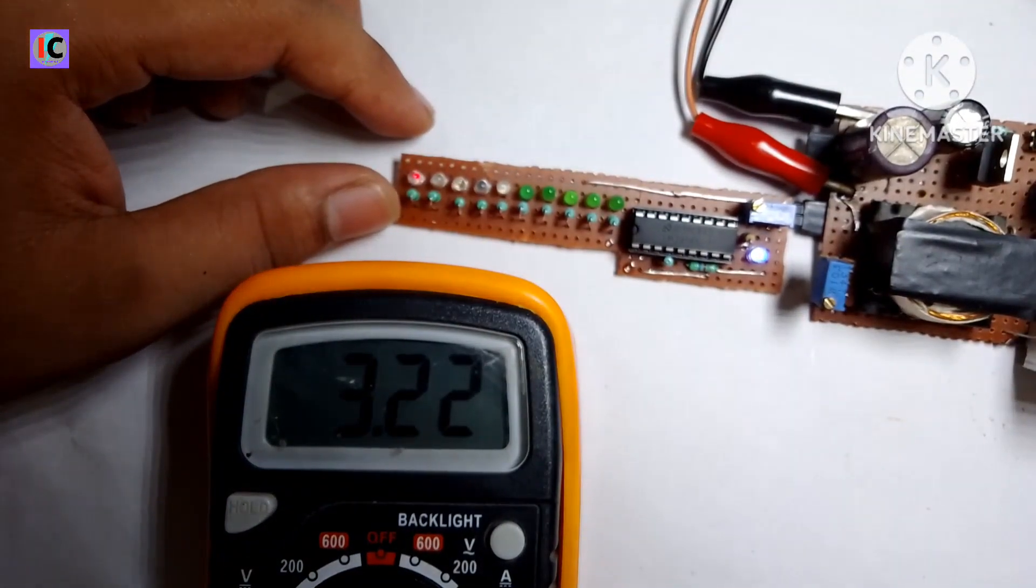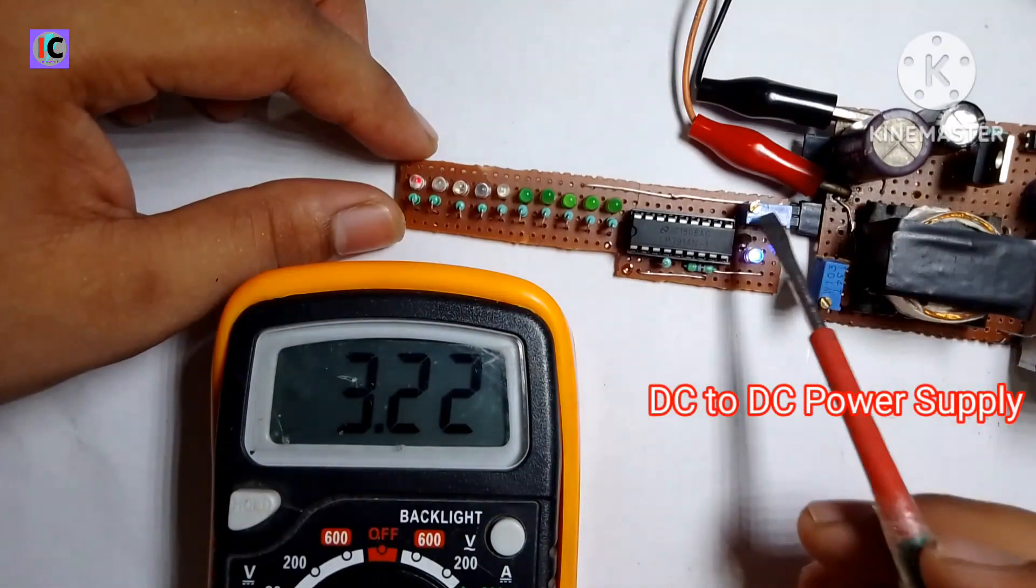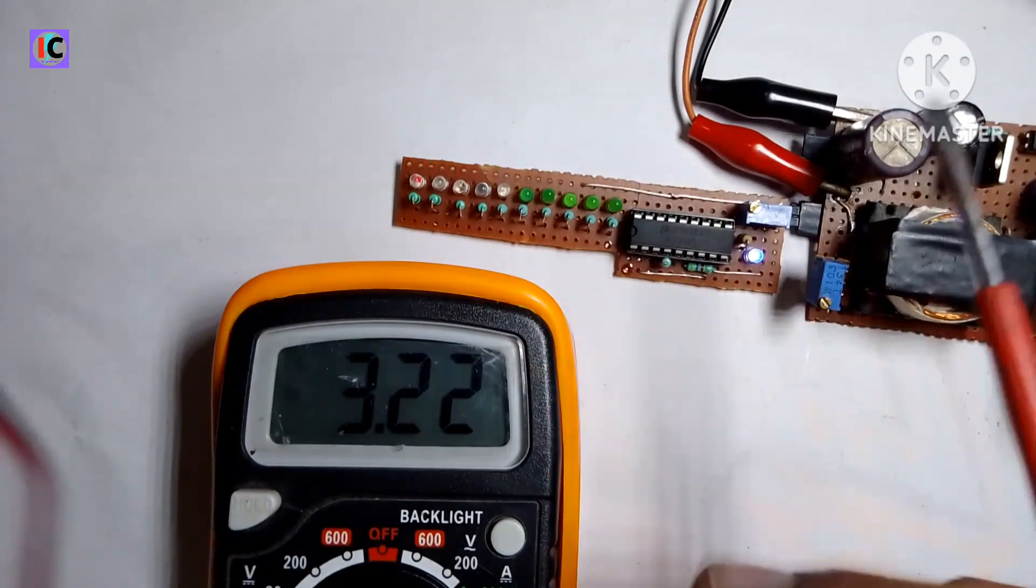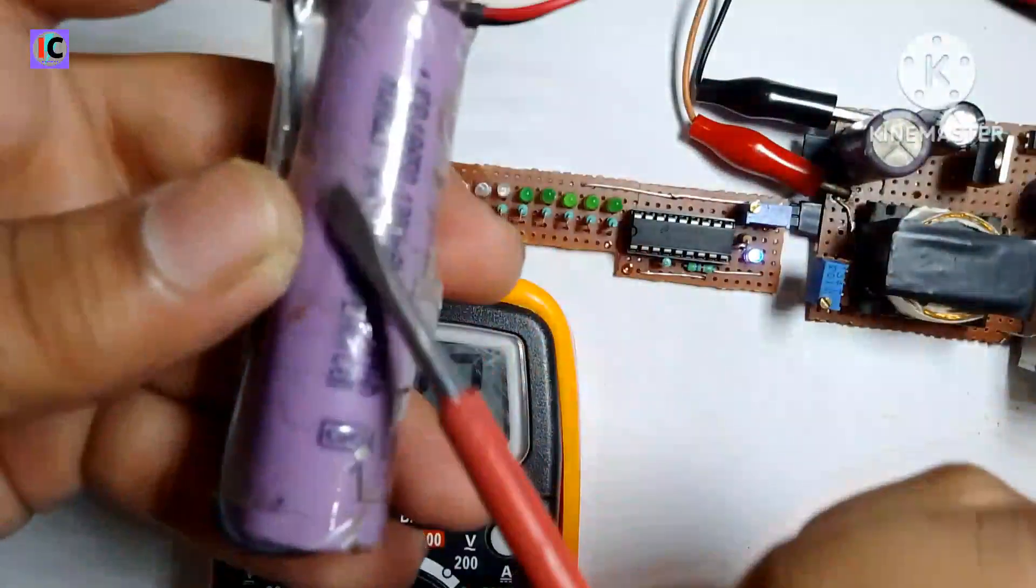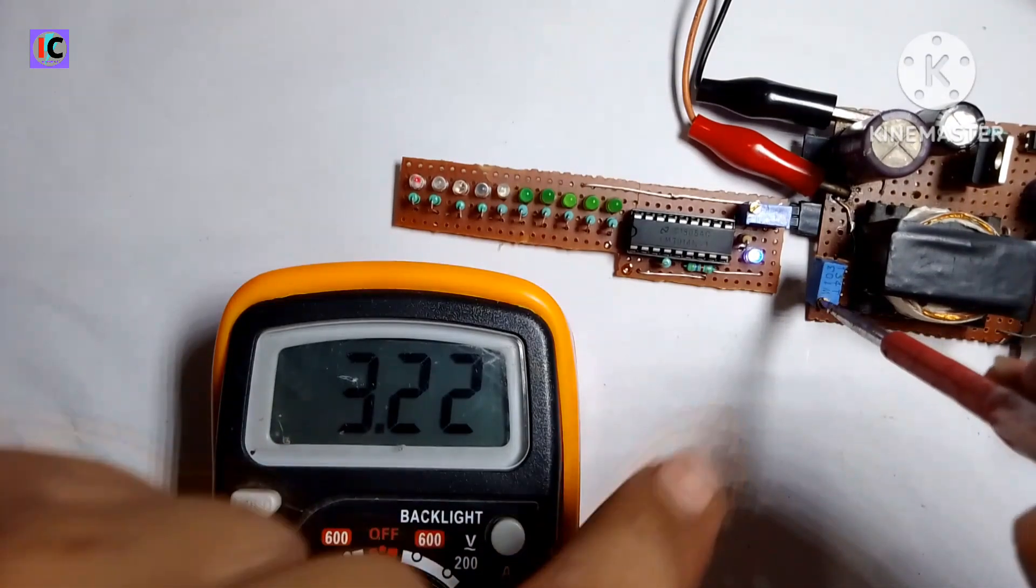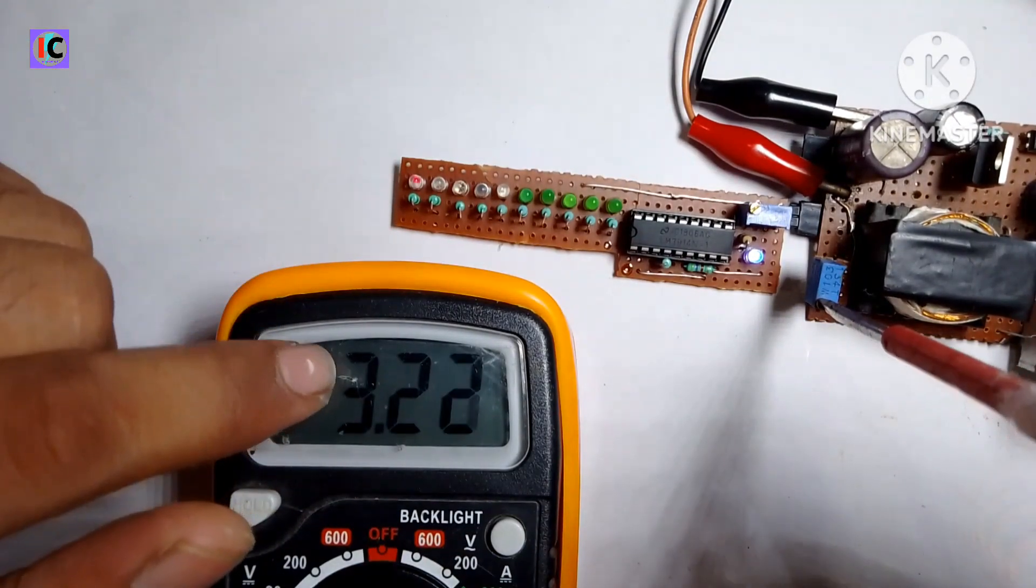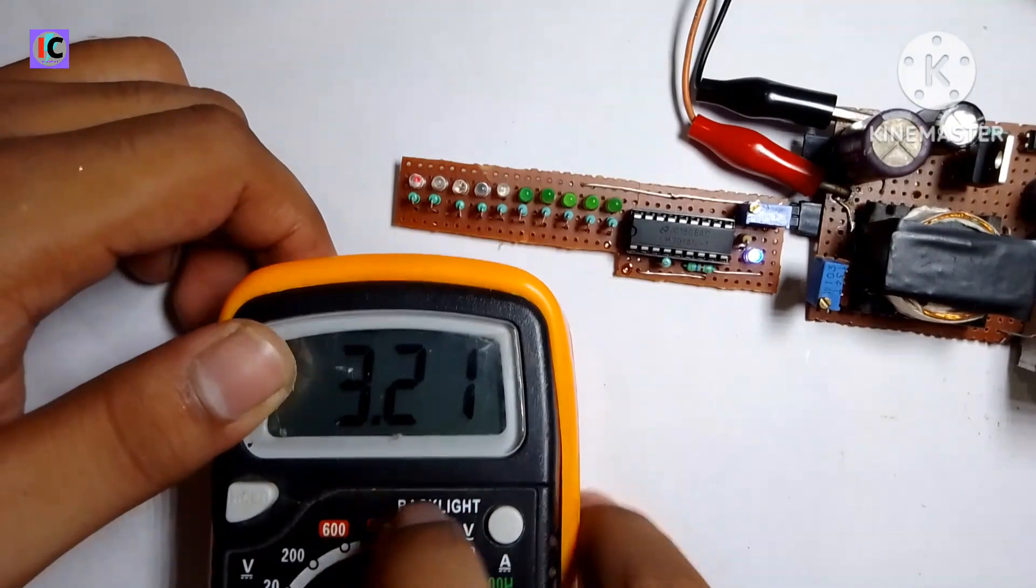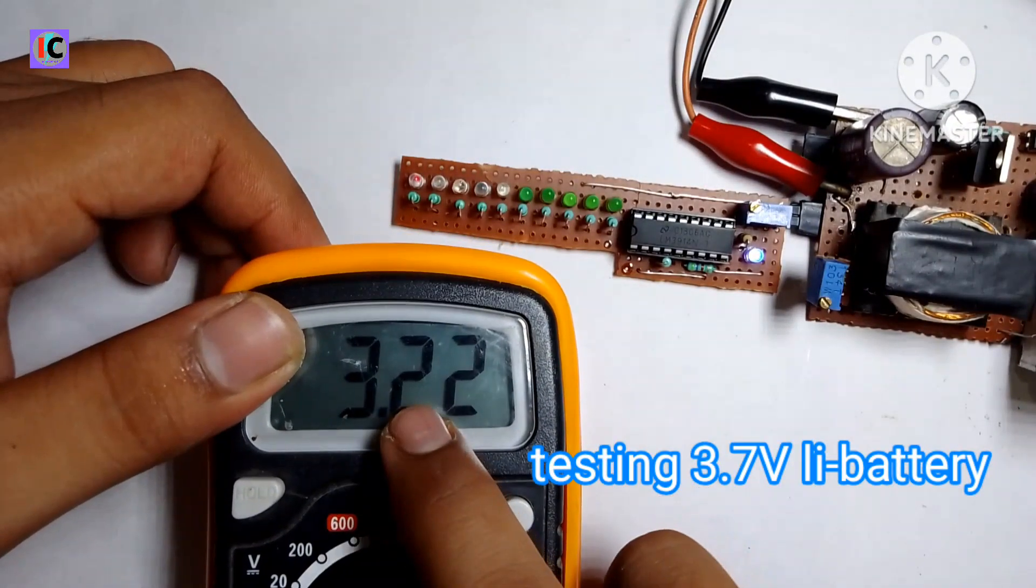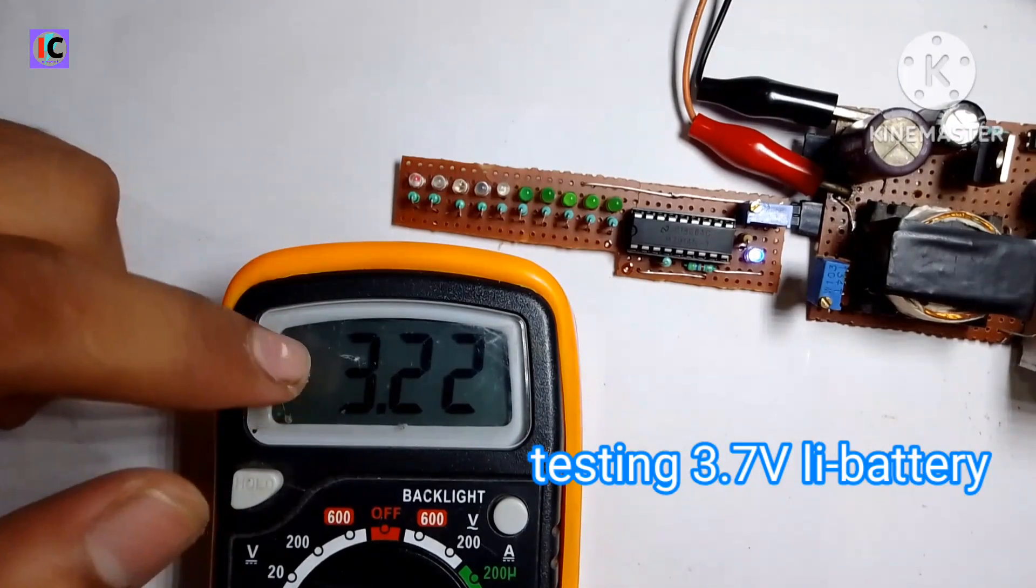Let's see the working of this module. For this I have connected to my variable power supply DC to DC converter, and you can see the voltage on the multimeter. It's 3.2 volts, and in that case I have it indicating the voltage of a 3.7 volt lithium battery.